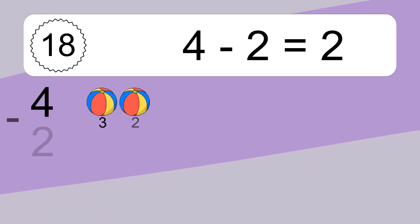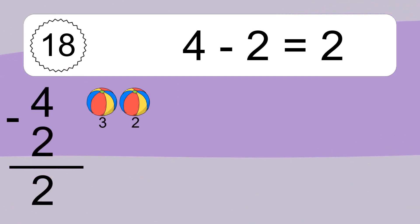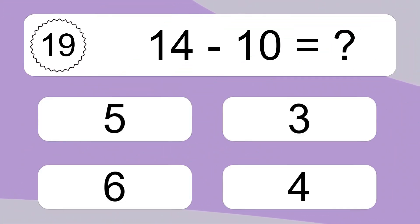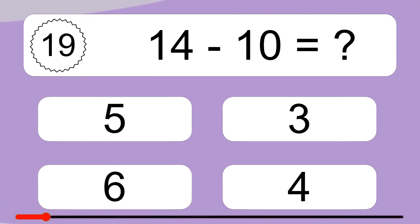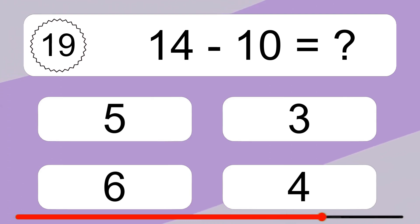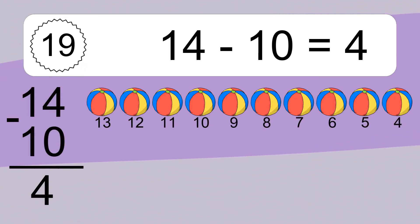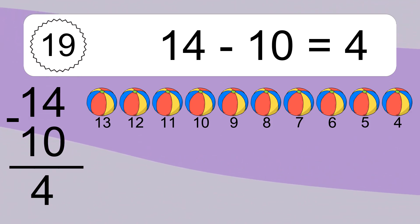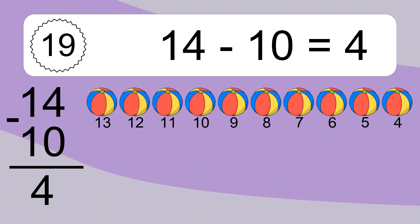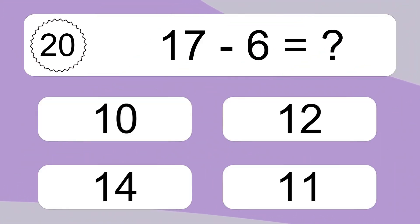4 minus 2 equals what? 4 minus 2 equals 2. Let's count it: 3, 2. 14 minus 10 equals what? 14 minus 10 equals 4. Let's count it: 13, 12, 11, 10, 9, 8, 7, 6, 5, 4.